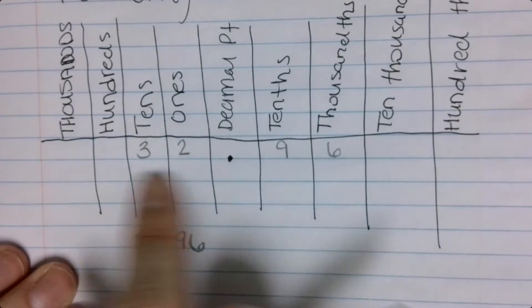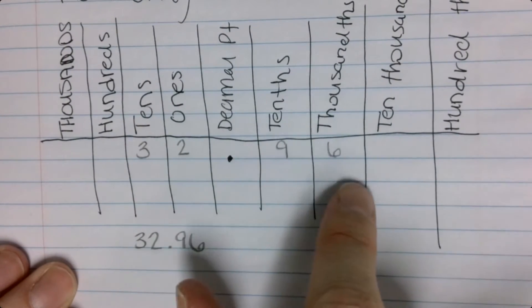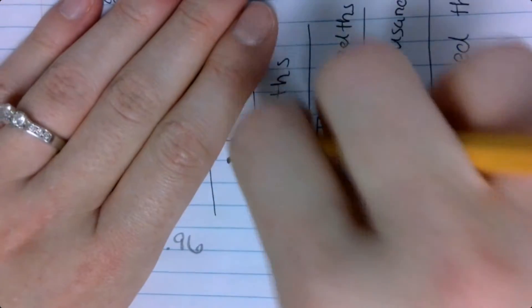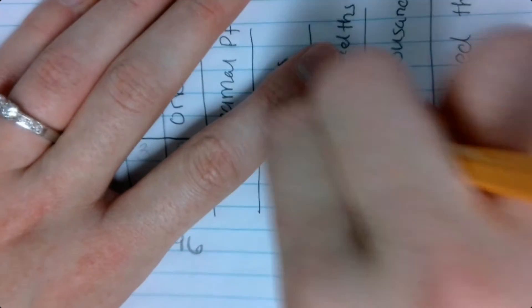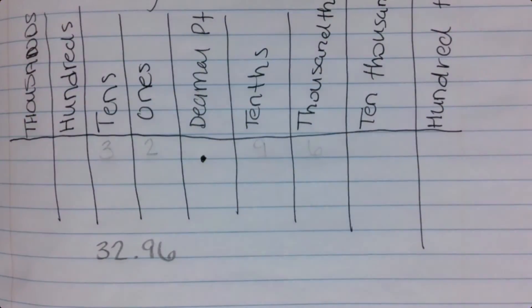You can look at it in the chart and go, okay, here's what I need to round. Here is this, and then again, if you kind of do it in pencil, I know it may not be perfect, but you can kind of erase it and start on your next problem.